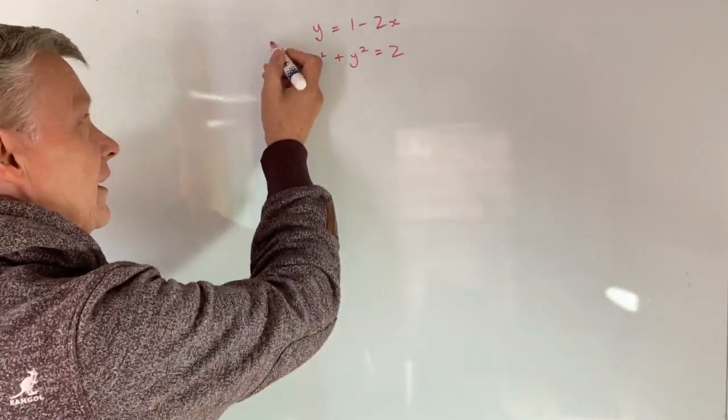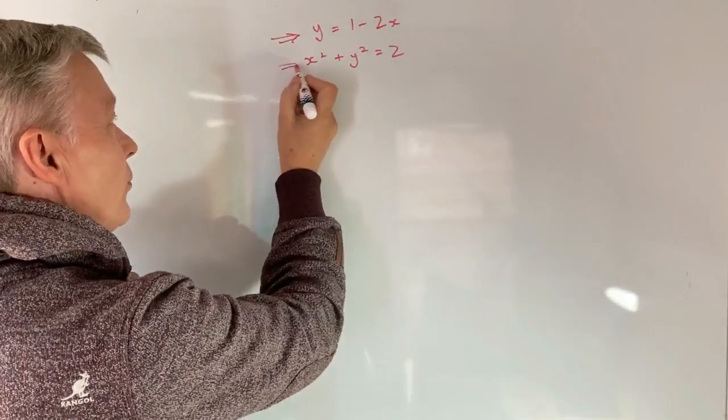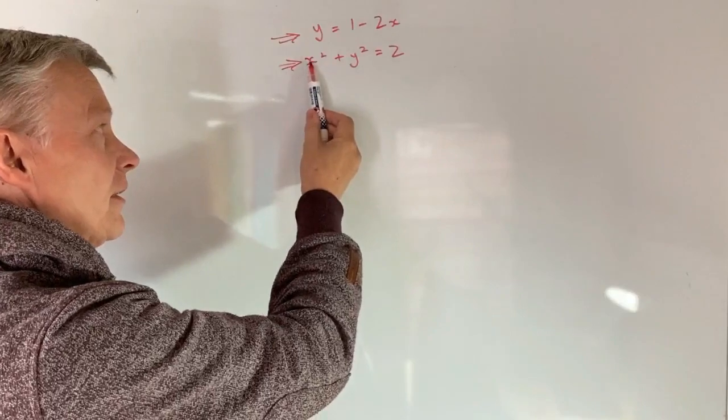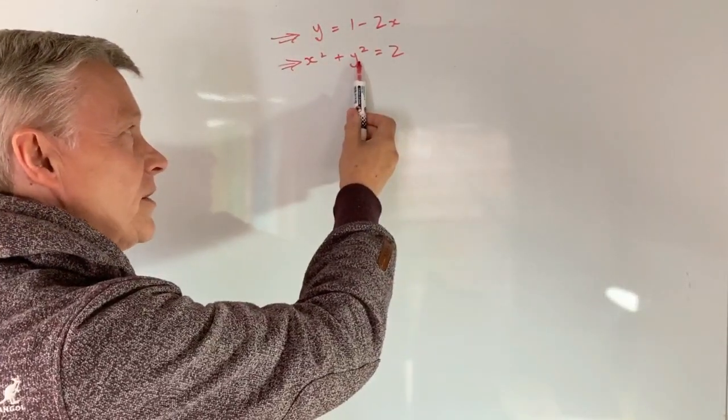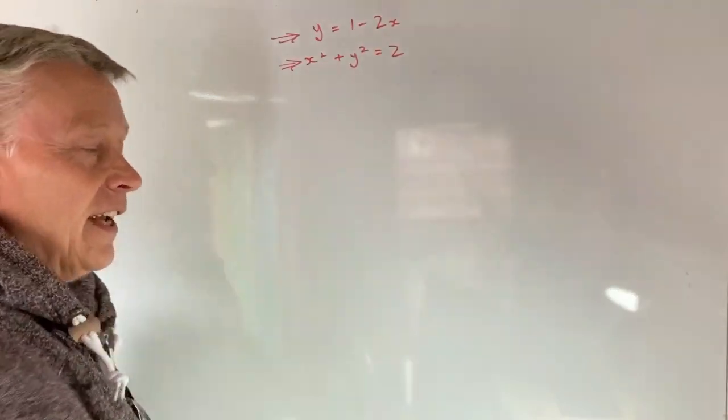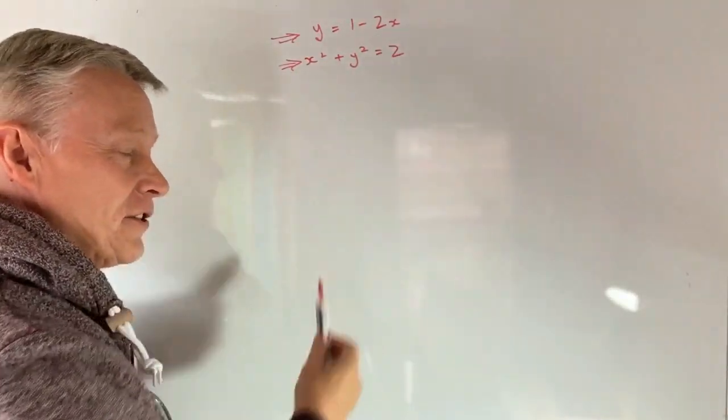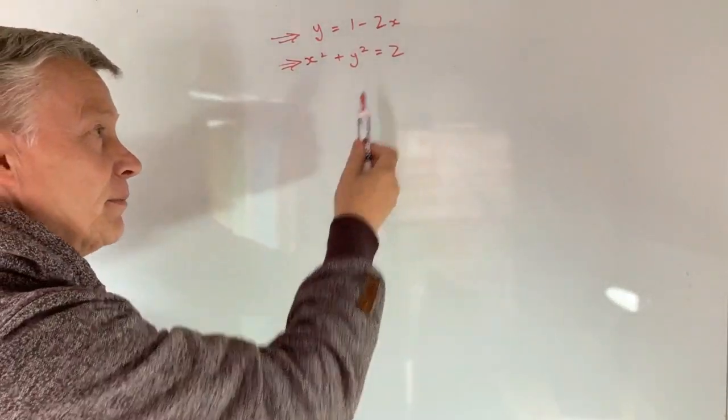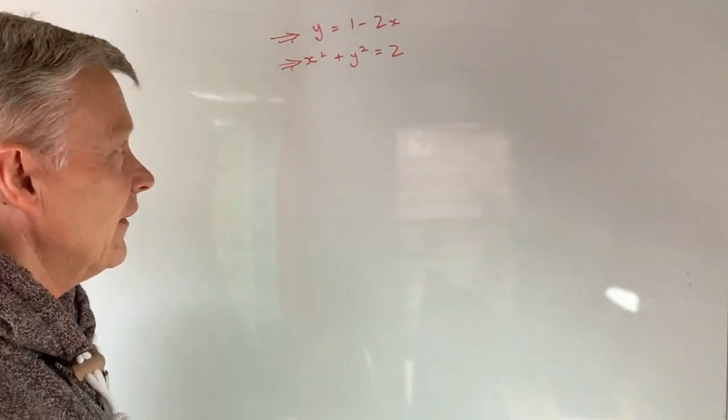Now basically you'll recognize that this is a straight line and this is the equation of a circle. Now the reason I know that is because not only have I got an x squared term but also I've got a y squared term and actually this is r squared. This is the radius squared. So actually if I want to know the radius of the circle I just simply square root 2 which is about 1.4 something like that.